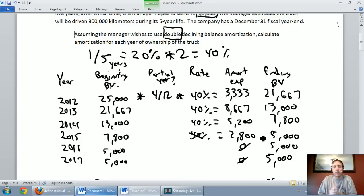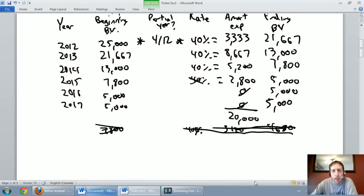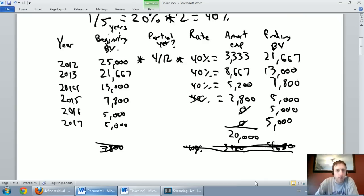This is called double declining balance method. It's a very accelerated amortization method. When I add up my amortization expense, there should be a familiar number. $3333 plus $8667 is $12,000. $5,200 and $2,800 is $8,000. Total up the whole column and you get $20,000. That, of course, is our amortizable cost. We said we were going to amortize this asset for $20,000. Now we have.